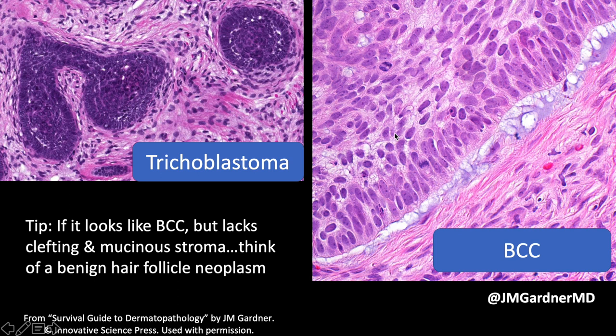This is another benign hair follicle tumor called a trichoblastoma. In my opinion, trichoepithelioma and trichoblastoma are both benign hair follicle tumors that probably exist on a spectrum. The name matters less than recognizing it's benign and not BCC. If it looks like BCC but you don't see good clefting and mucin, and the stroma looks cellular and is hugging the nests, think benign hair follicle neoplasm. These can be tricky — if you're not a dermatopathologist, consider getting a consult.